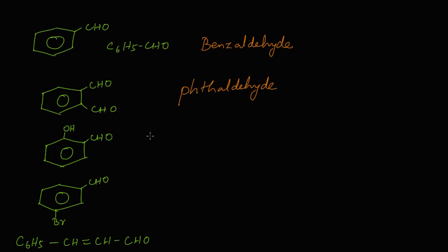The common name for the compound with OH and CHO in the ortho position on the benzene ring is salicylaldehyde, also called ortho-hydroxybenzaldehyde. The fourth compound has bromine in the meta position relative to the aldehyde group, so it is known as meta-bromobenzaldehyde.